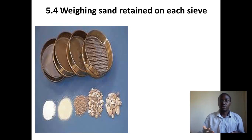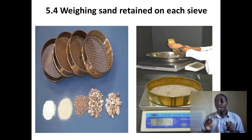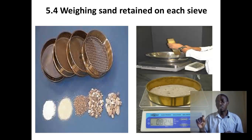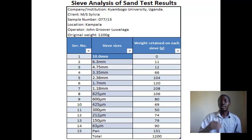Weighing sand retained on each sieve size: all sand particles retained on each sieve are collected and kept separately. Their individual weights are determined and recorded in a record sheet against their respective sieve size, as seen in the table.